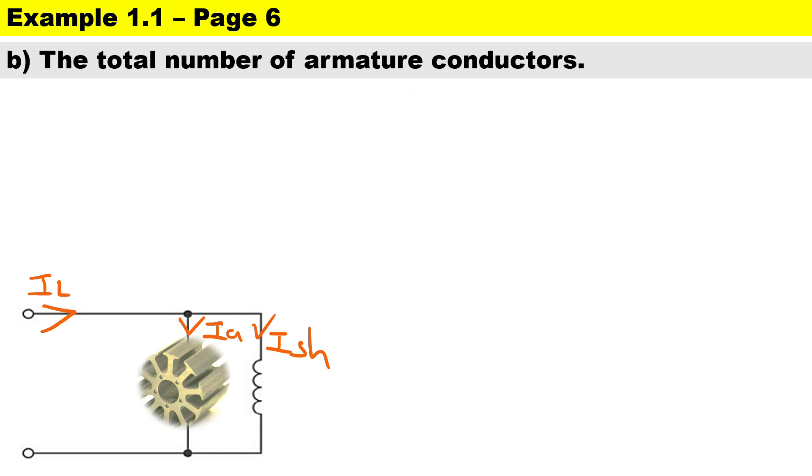Next question: Calculate the total number of armature conductors. Here we're going to use the EMF equation: 2 times p times n times Z times flux all over c times 60.